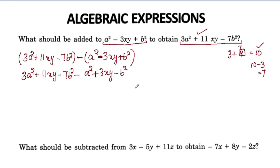This is the next step. In front of the bracket we have a minus sign. We have to open the bracket and change the signs of the two expressions, then collect the like terms.